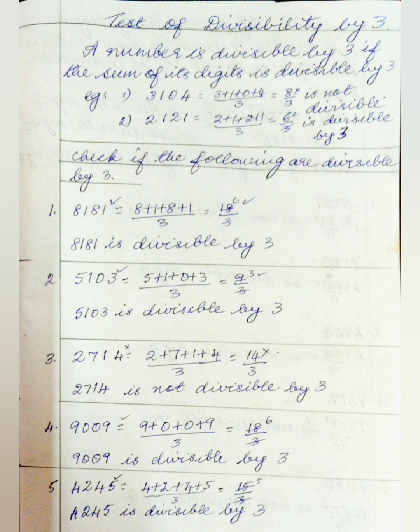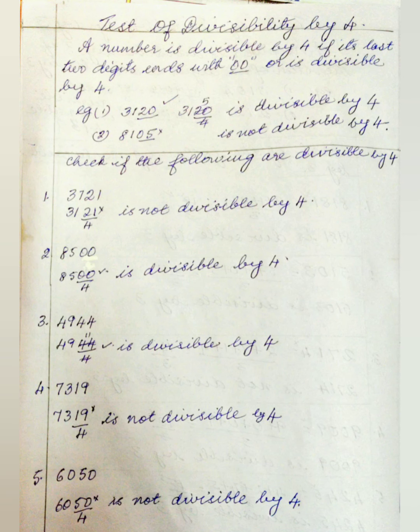9009: 9+0+0+9 = 18, and 3 goes into 18 six times, so 9009 is divisible by 3. Likewise, 4245: 4+2+4+5 = 15, and 3 goes into 15 exactly five times, so 4245 is divisible by 3.